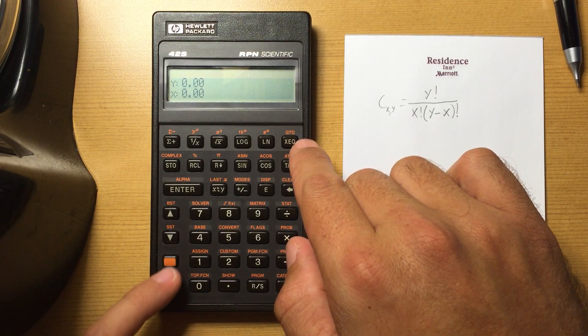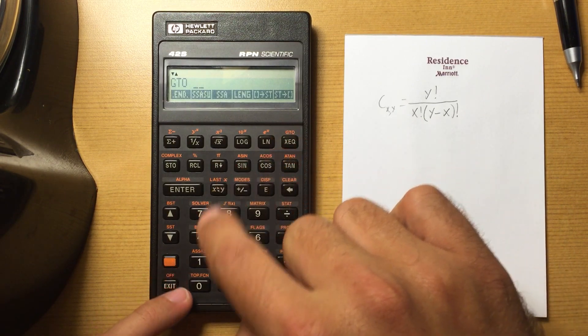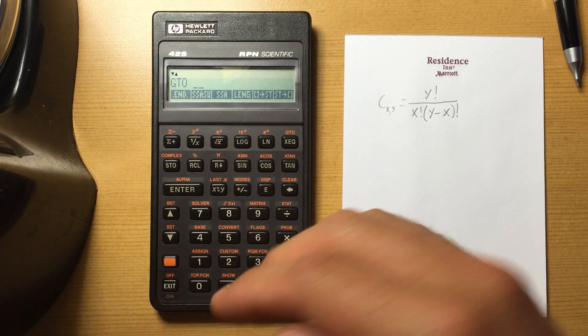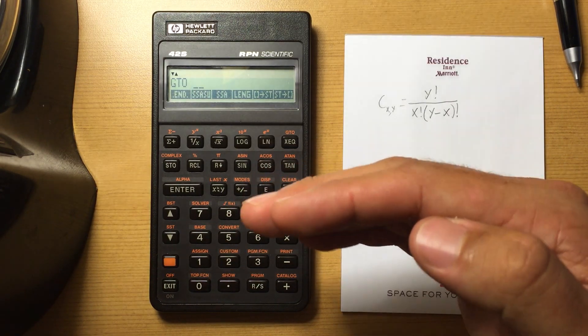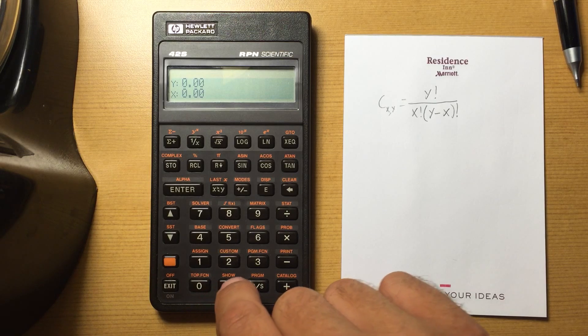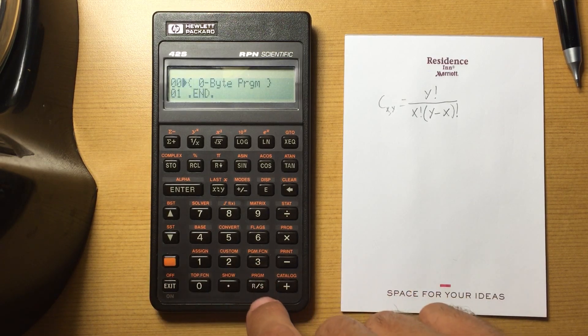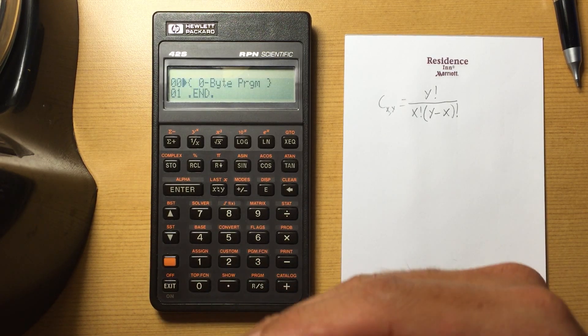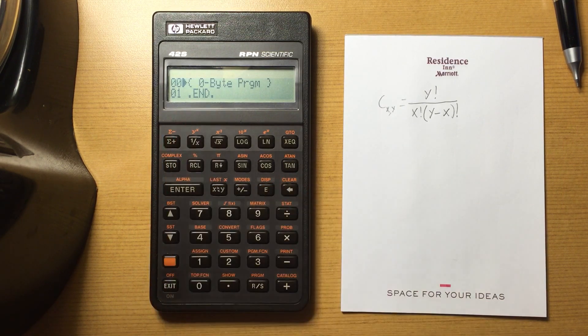I've already started a new one, but to start a new program space, you can append onto the old one and use a global label, or you can start a new one by doing double dot. So now when I go to program, it's a zero byte program. It automatically puts in the end for me.